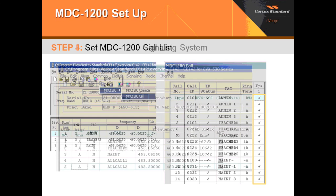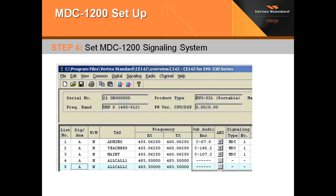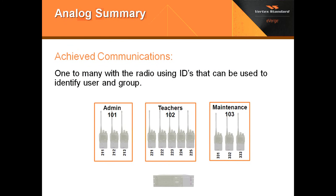Once you've clicked on that, it will bring up your MDC-1200 call list. As you can see, you can enter in all the appropriate IDs of your system. Make sure that system 1 is checked, and you may type in the tags as well — this is what the ANI is referencing. After this, you will click OK. We'll go ahead and look at MDC-1200 signaling systems. You click on it and have a pull-down; you want to select MDC System and then pick which system you want. Once you've done this, you will then lose the ANI checkbox.